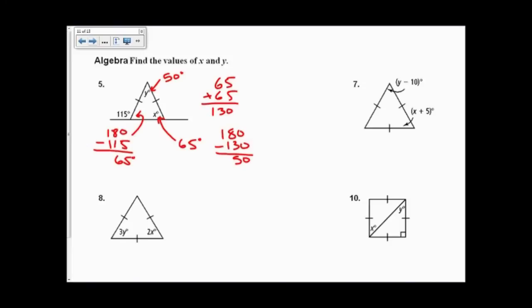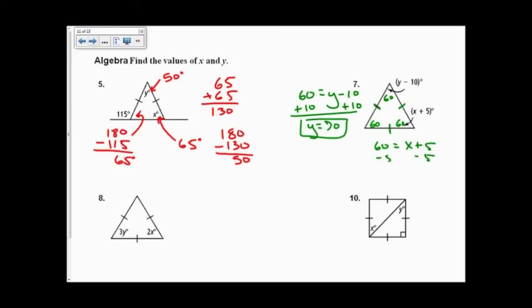In problem 7, since the triangle is equilateral, it must also be equiangular — one of the corollaries. Each angle equals 60 degrees, and this is true for every equilateral triangle. Setting 60 equal to Y minus 10 and adding 10 to both sides gives Y equals 70. Setting 60 equal to X plus 5 and subtracting 5 from both sides gives X equals 55.